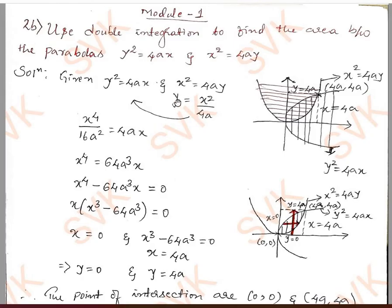From the second curve I will evaluate y, which is nothing but x²/4a. Substituting this value into the first curve, I get x⁴/16a² = 4ax. Multiplying both sides by 16a², it becomes x⁴ = 64a³x. Shifting terms to the left-hand side and taking x as common, I get x = 0 and x³ − 64a³ = 0.